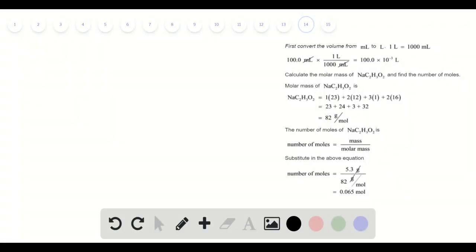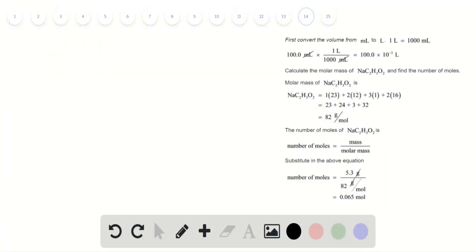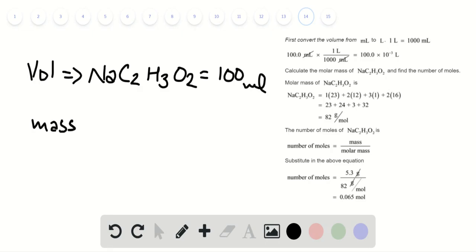From the question we obtain certain information: we have volume of NaC2H3O2 as 100 mL and the mass of solute equal to 5.3 grams.